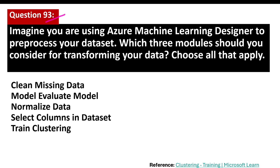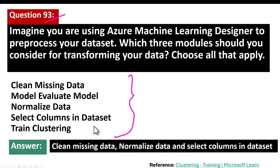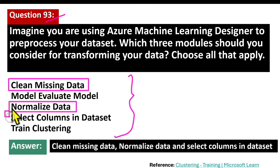Question number 93. Imagine you are using Azure Machine Learning Designer to pre-process your dataset. Which three modules should you consider for transforming your data? You need to pick three correct answers to get full marks on this question. The correct answers are: clean missing data, normalized data, and select columns in dataset.